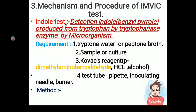Now the most important point: the mechanism and procedure of the IMViC test. The first test is the Indole test, where I stands for Indole. The Indole test is based on the detection of indole, also called benzyl pyrrole, produced from tryptophan by the tryptophanase enzyme produced by the microorganism. This test depends entirely on whether the microorganism can produce indole from tryptophan, which is why it is called the Indole test.